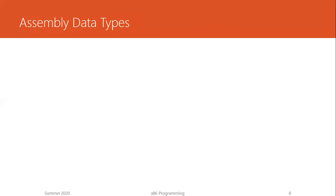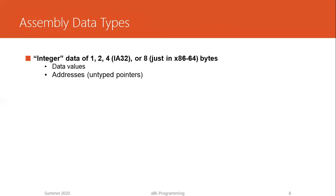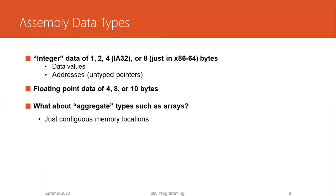On data types: as with any other programming language, assembly also has support for integer data of various sizes. The size could be one byte, two bytes, four bytes in case of 32-bit architecture, and eight bytes in case of 64-bit architecture. Floating point data are four, eight, and ten bytes long. Assembly does not have a data type for arrays — instead, data is laid out contiguously in memory so that access is similar to how one would access an array: contiguous memory locations.